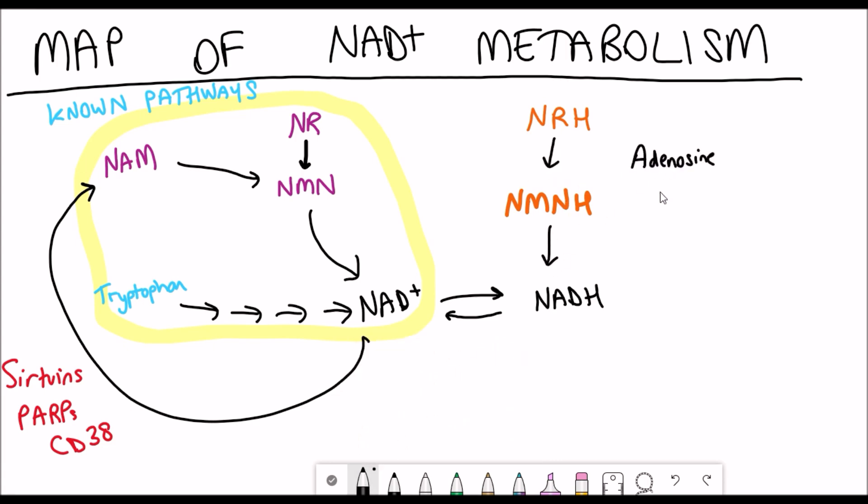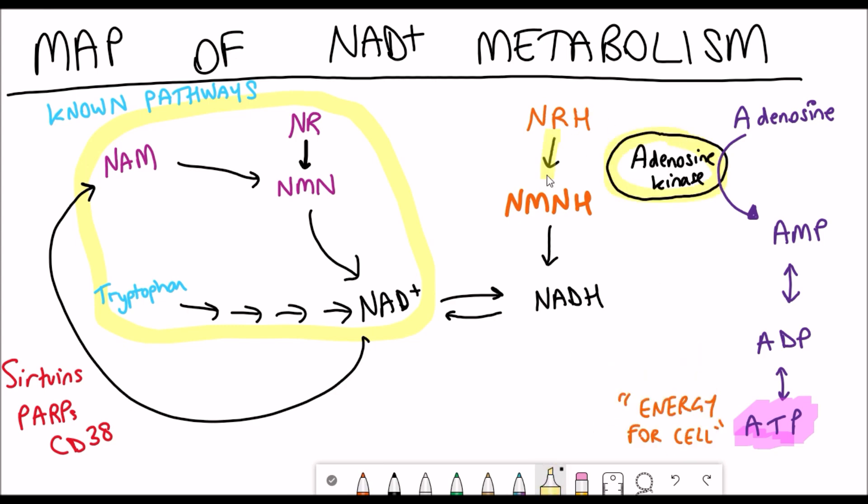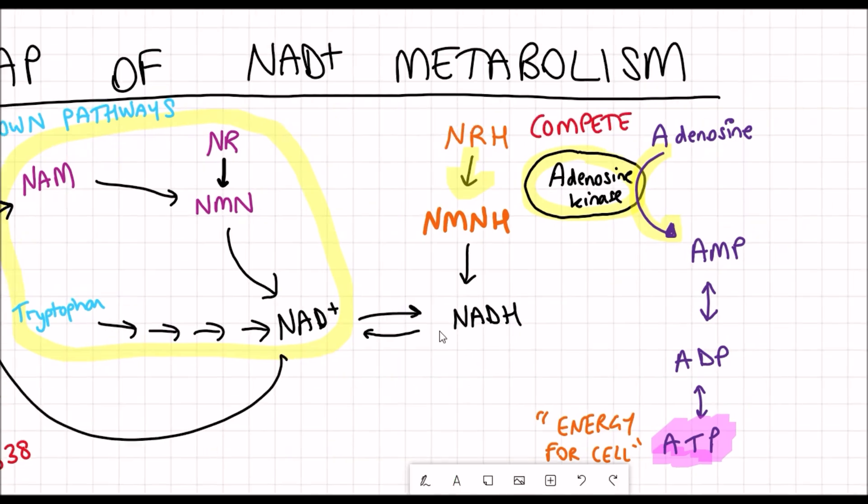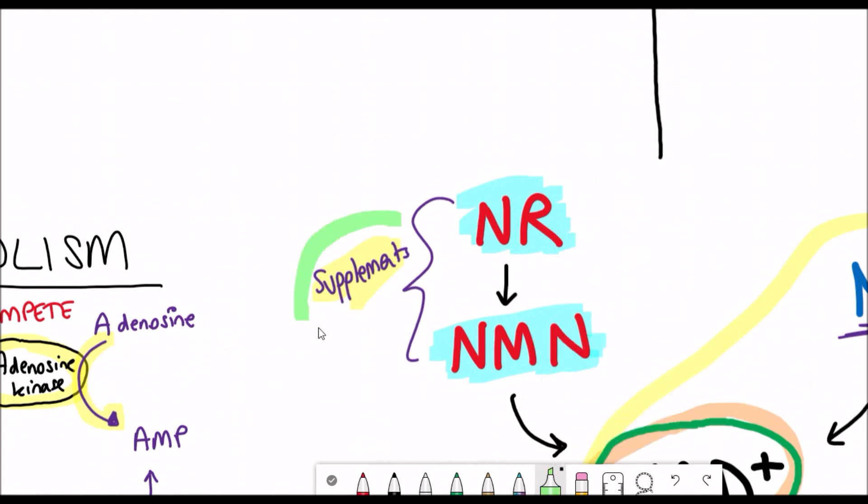The interesting thing is that adenosine kinase was already known about and its main enzymatic reaction is converting adenosine into AMP, and this is interesting because AMP can be converted to ATP, adenosine triphosphate, which is the energy currency of a cell and is important for numerous reactions. These two compounds, NRH and adenosine, actually compete for the activity of the enzyme, and so this provides a further connection between ATP metabolism and NAD plus metabolism that are both critical for understanding energy use within a cell.